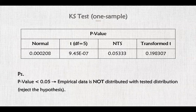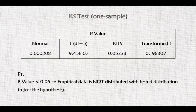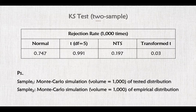Based on our data from 2004 to 2013, we took a one-sample KS test relative to the distributions we discussed. According to the results, the empirical data is not distributed as normal distribution or Student T distribution. However, it fits the NTS distribution and transform T distribution. Besides, we took a two-sample KS test with two samples derived from 1,000 times Monte Carlo simulation of the tested distribution and the empirical distribution. The rejection risk from the chart also implies better fitness of NTS distribution and transform T distribution with the empirical samples.